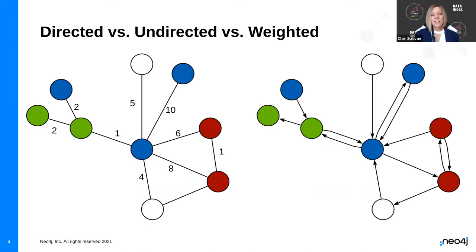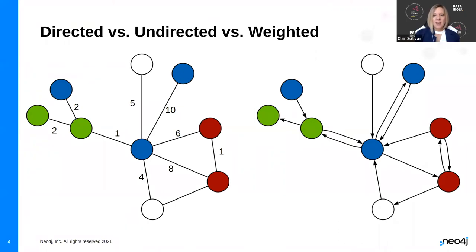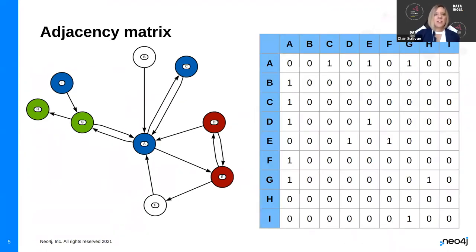We can add one more layer when we talk about a weighted graph. I've added some numbers to the graph, indicating the strength of connection between two nodes. For instance, the central blue node and the blue node at roughly the 1 o'clock position have a weight of 10, whereas those two red nodes on the right only have a weight of 1. This might represent how often two nodes communicate, or maybe distance between nodes on a map.